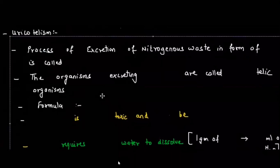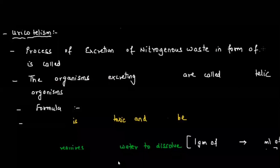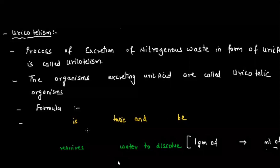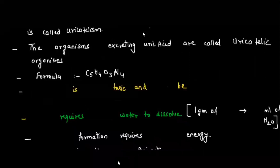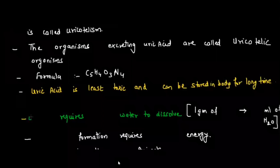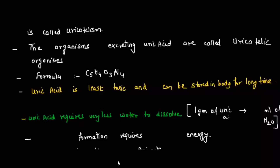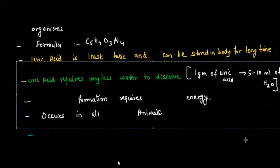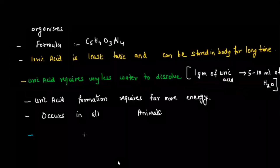Uricotelism: the process of excretion of nitrogenous waste in the form of uric acid is called uricotelism. Organisms excreting uric acid are called uricotelic. The formula for uric acid is C₅H₄O₃N₄. Uric acid is the least toxic, so it can be stored in the body for a long time. It requires the least water to dissolve — one gram of uric acid dissolves in just 5 to 10 ml of water.